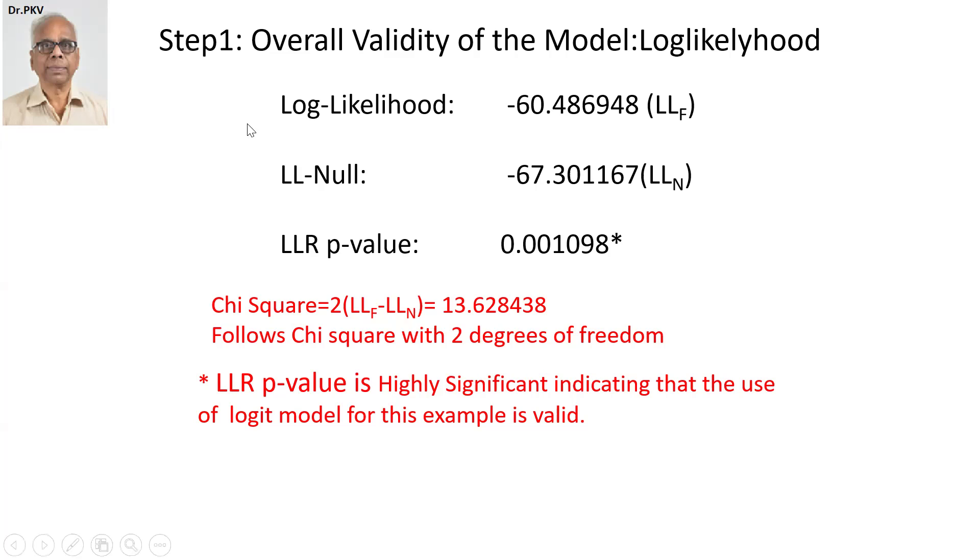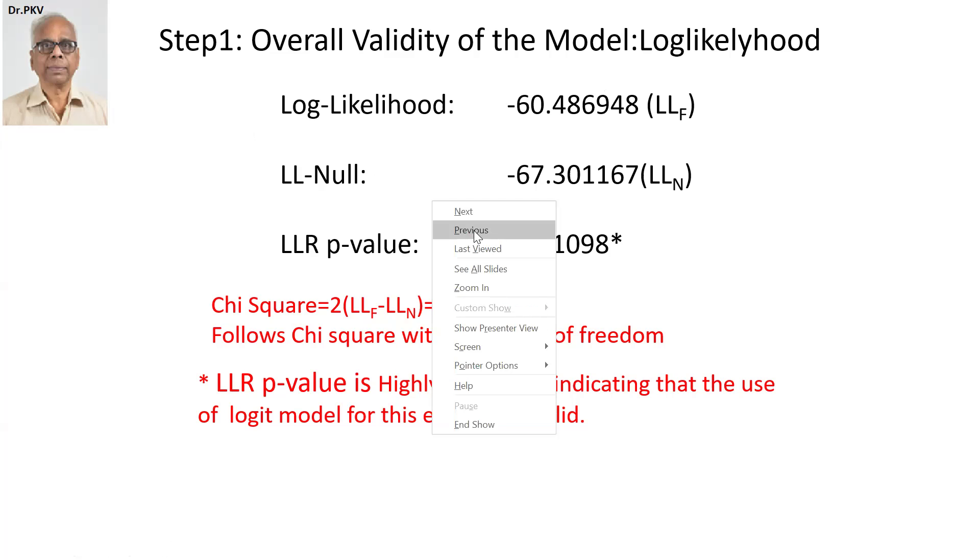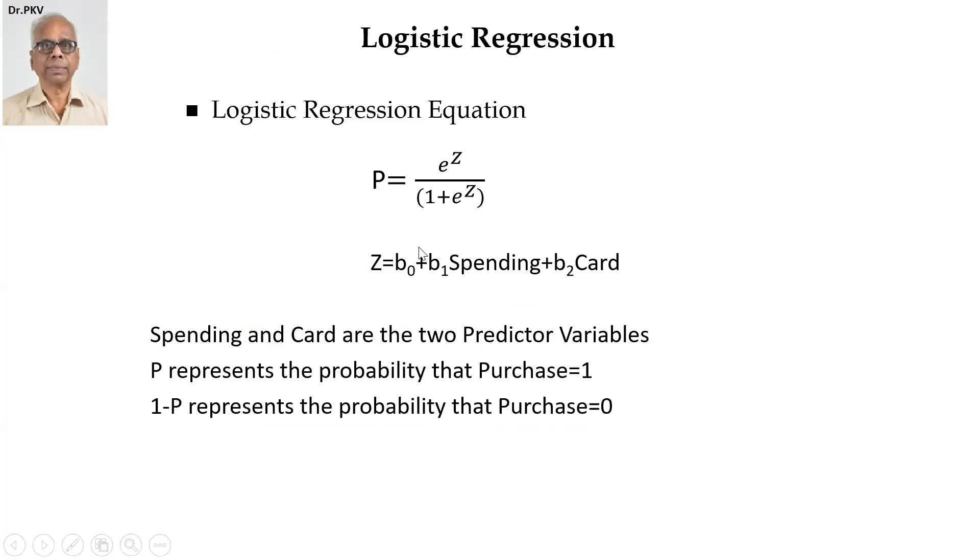Now, what is this null model? We all know log likelihood is maximized and this value is fine. This null model is, if I assume in the previous slide, for example, only the intercept exists. b1, b2, they are not there. b1 and b2 are set equal to zero.